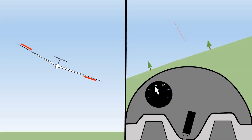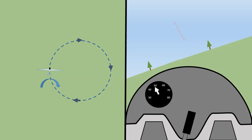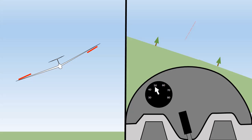To perform a turn we simply roll the glider by moving the stick to one side — in this case to the right — and then centralise the stick, and the glider will continue to fly in a circle. You will find that you need to apply a small amount of back pressure on the stick to keep the nose up, otherwise the nose will drop in the turn and the speed will increase. The same is true to the left: if you move the stick to the left the glider will continue to roll to the left until you centralise the stick.